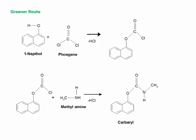As we can see, the greener route uses exactly the same reagents but in a different sequence. Hence, this synthesis avoids the preparation of methyl isocyanate, which was responsible for the Bhopal gas tragedy. However, the use of phosgene and methyl amine still needs to be avoided.